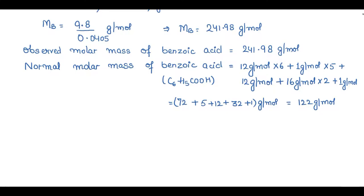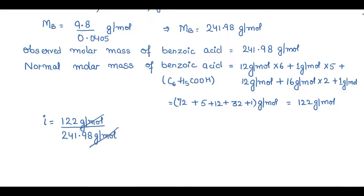Now we can find the van't Hoff factor. i = normal molar mass / observed molar mass = 122 g/mol ÷ 241.98 g/mol. The units cancel, and the van't Hoff factor is unitless. So i = 122 / 241.98 = 0.504.